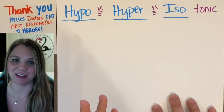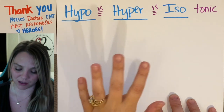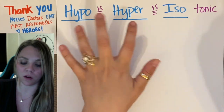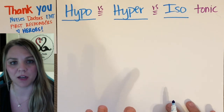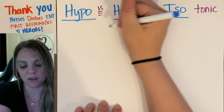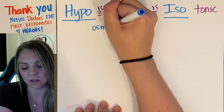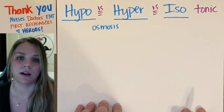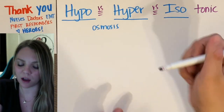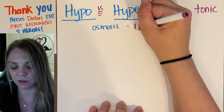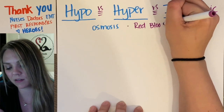What do they mean? It's really not that difficult. All these words describe osmosis-type phenomena, and in all of these we're dealing with osmosis. The best and most common way that we talk about these is with our red blood cells.